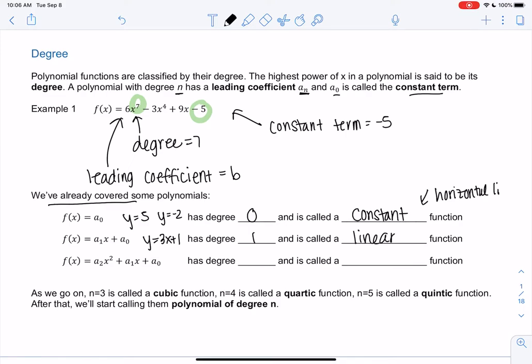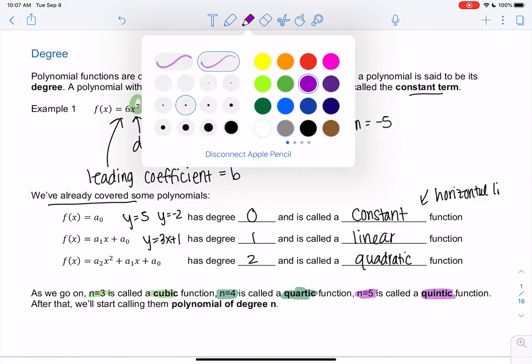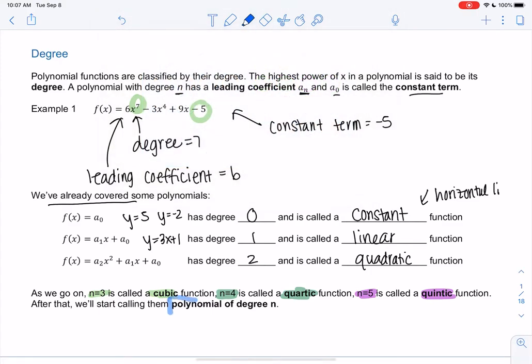That has degree 1 because x has a power of 1, and it's called a linear function. We've also seen quadratics - a2x squared. Because of the x squared, that makes it have degree 2, and it's called a quadratic. It keeps going, so we're adding new powers now. n equals 3 is called a cubic function. n equals 4 is quartic. n equals 5 is quintic. But really, after a while, we just start calling them polynomial with degree n. You can just say a polynomial of degree 5.